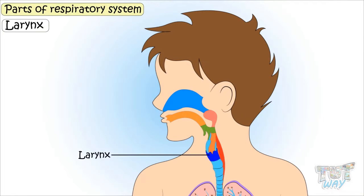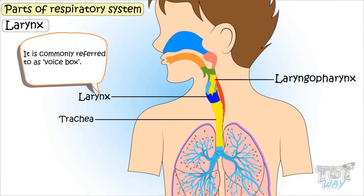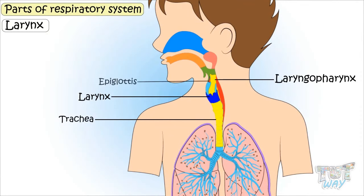The next part we will learn is the larynx. The larynx connects the laryngopharynx to the trachea, and it is also commonly referred to as the voice box. The epiglottis is also a part of the larynx.